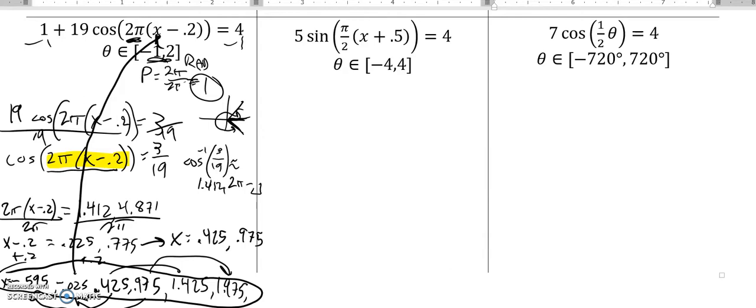Next one, check it out. I'm in radians, negative 4 to 4. And if I think about my period, 2π divided by π over 2, that's 4. It's actually a period of 4 here, so I shouldn't be getting too many answers, that's pretty big.